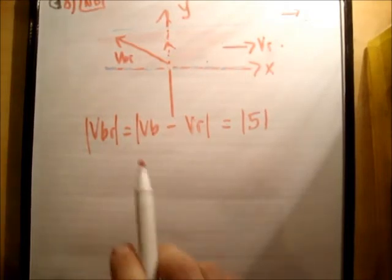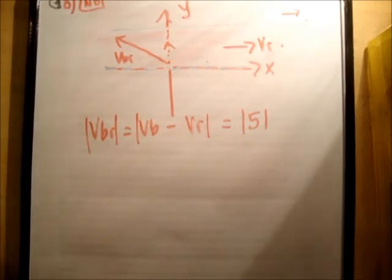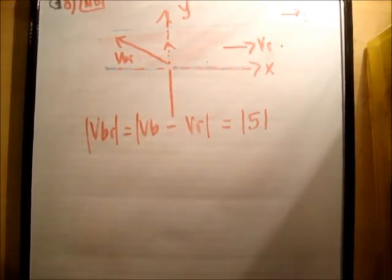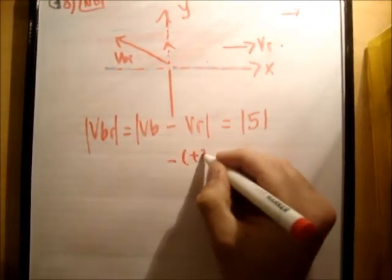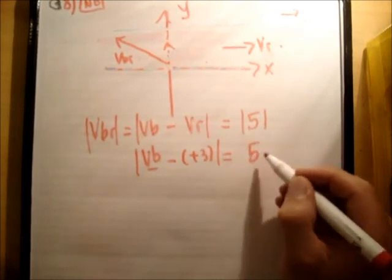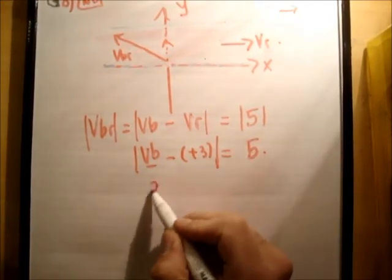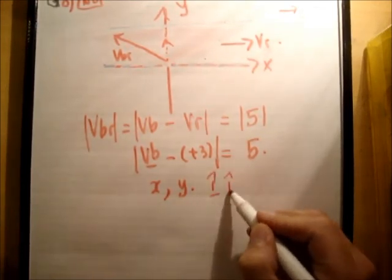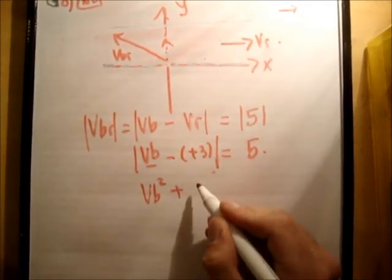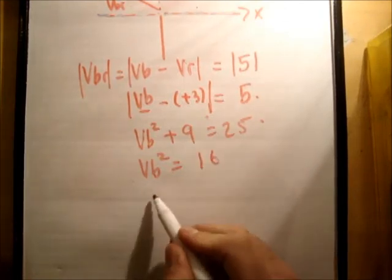This time however, I'm going that direction. So we have VBR going in the negative i hat direction. The magnitude of which is equal to 5 units. So let's get the magnitude of VB without actually getting the i hat and j hat components. I'm just going to use magnitudes. So VB squared plus 9 is equal to 25. VB squared is equal to 25 minus 9 is 16. VB is equal to 4.